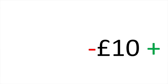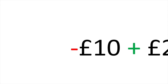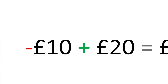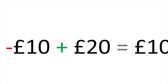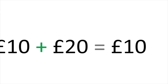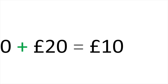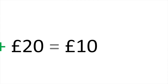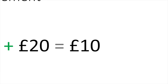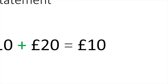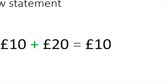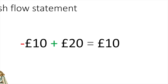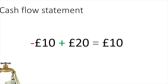Since you paid £10 out, the cash flow is actually minus 10, and when you add it up to the £20 received, the difference is positive 10, or £10 inflow. So the cash flow statement simply keeps track of when you paid money out and when you received money in, and the net flow is simply the result of all these transactions.